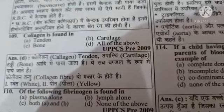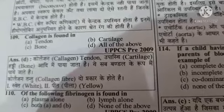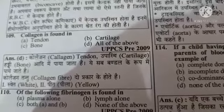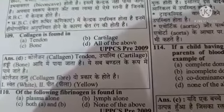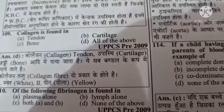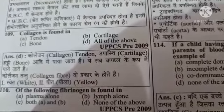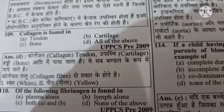Next question: of the following, fibrinogen is found in — Option A: plasma alone, Option B: lymph alone, Option C: both A and B, Option D: none of the above. The right answer is Option A: plasma alone.